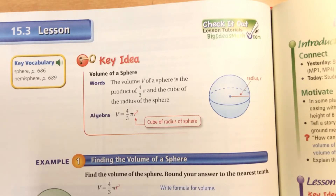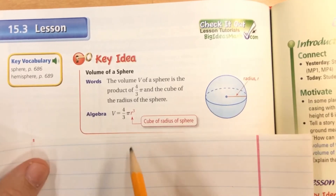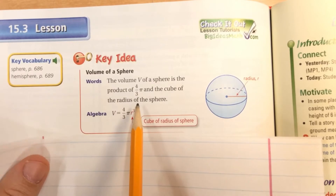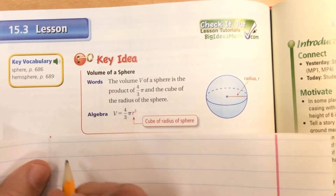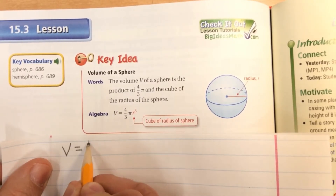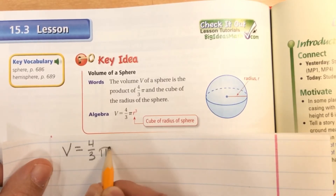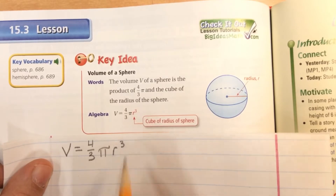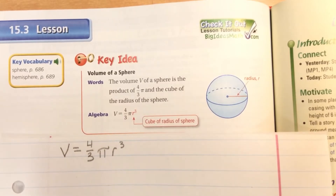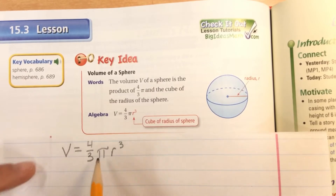This is lesson 15.3 - volume of a sphere. A sphere has its own volume formula: four-thirds pi r cubed. There is no height component to this volume formula.